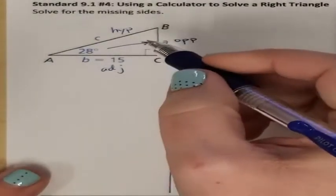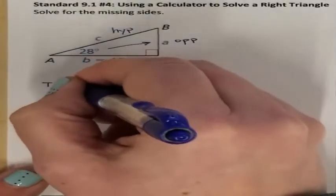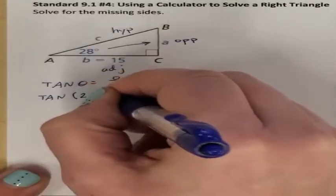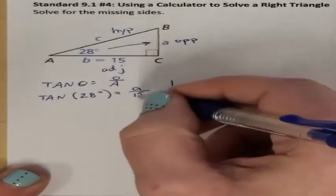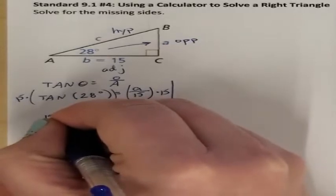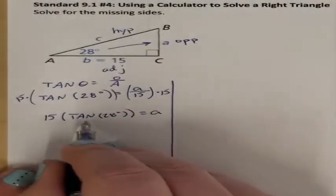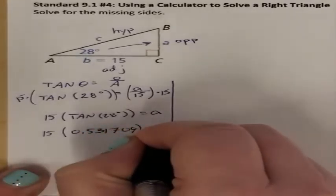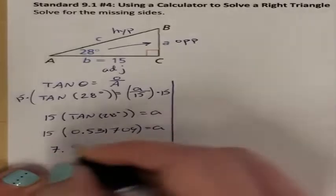If I have my adjacent and I want my opposite, opposite and adjacent is tangent. So I'm going to use tangent of theta equals opposite over adjacent. So I have tangent of 28 degrees equaling my opposite A over my adjacent 15. I need to solve for A, so I'm going to multiply both sides by 15. So I have 15 times tangent of 28 degrees equals A. Typing tangent of 28 degrees on my calculator, I get 0.531709. 15 times that entire number gives me 7.97564, so that is my value for A.